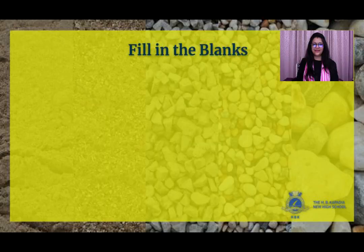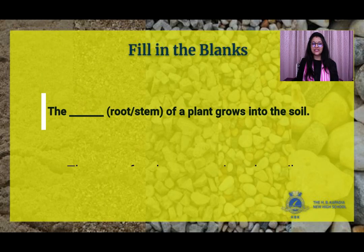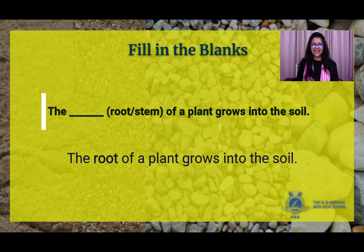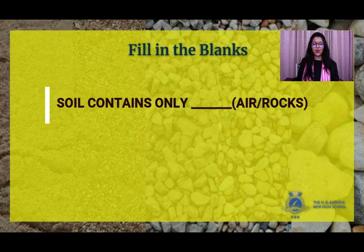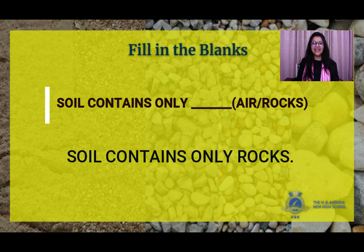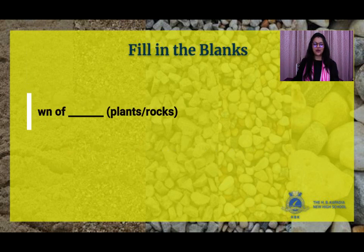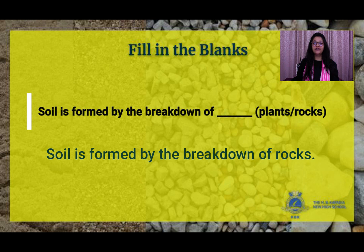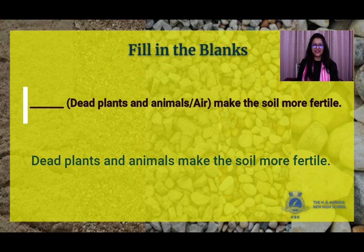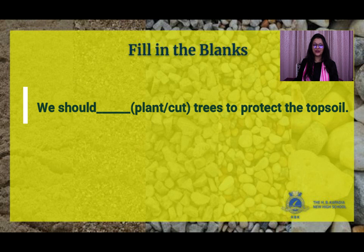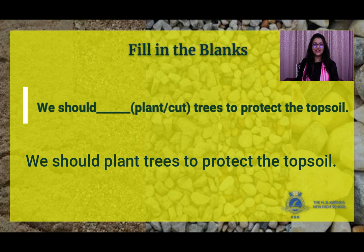Now students, let's start with the exercise. Section A: Fill in the blanks. Number one: the blank of a plant grows into the soil — answer: the root of a plant grows into the soil. Second: soil contains only blank — answer: soil contains only rocks. Third: soil is formed by the breakdown of blank — answer: rocks. Fourth: blank makes the soil more fertile — answer: dead plants and animals. Fifth: we should blank trees to protect the topsoil — answer: we should plant trees to protect the topsoil.